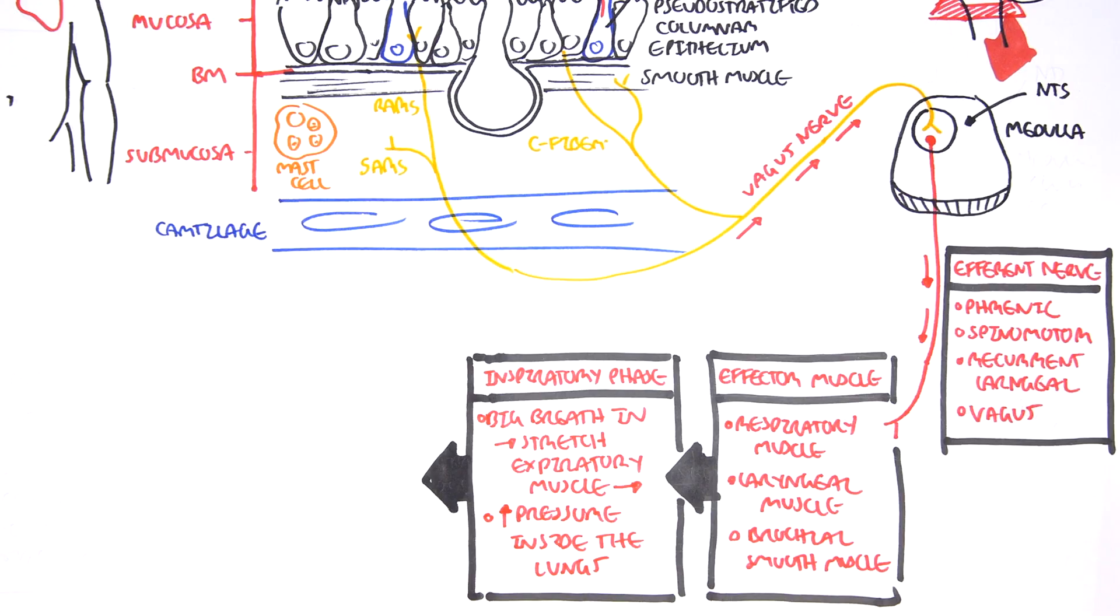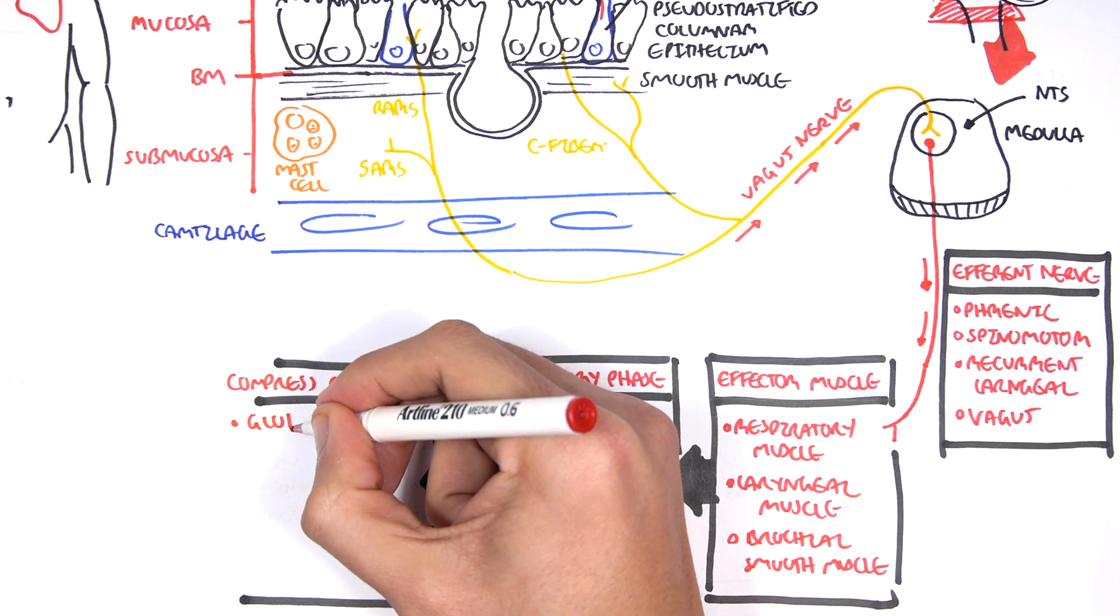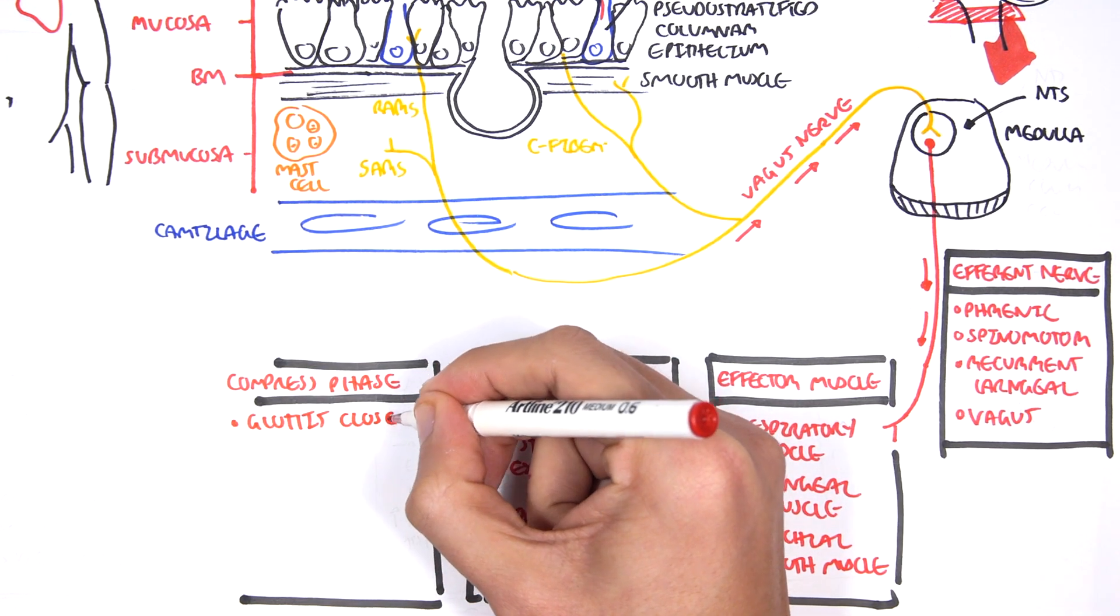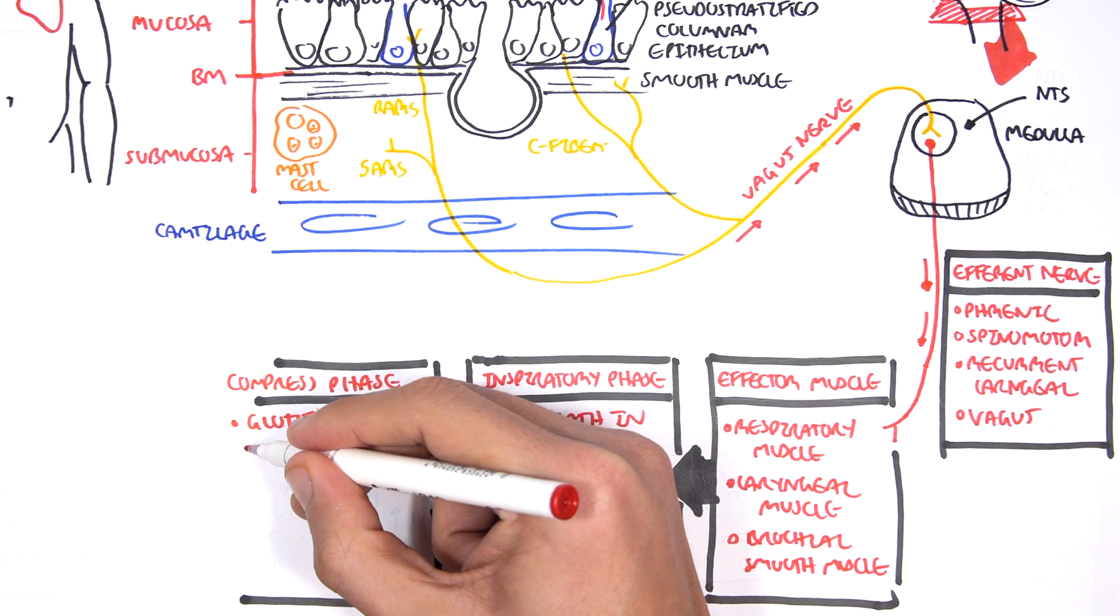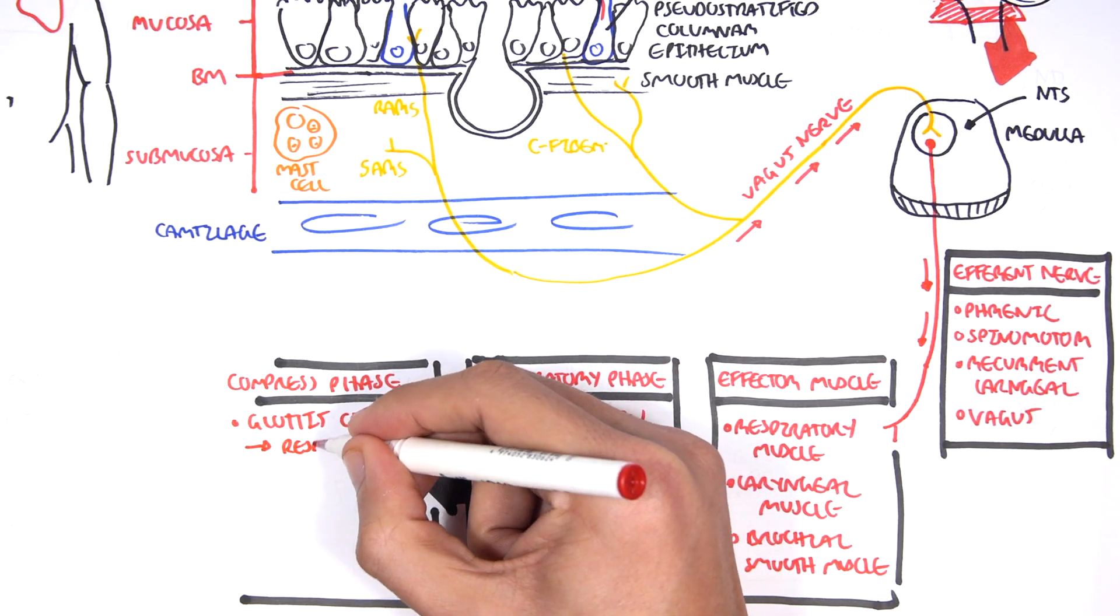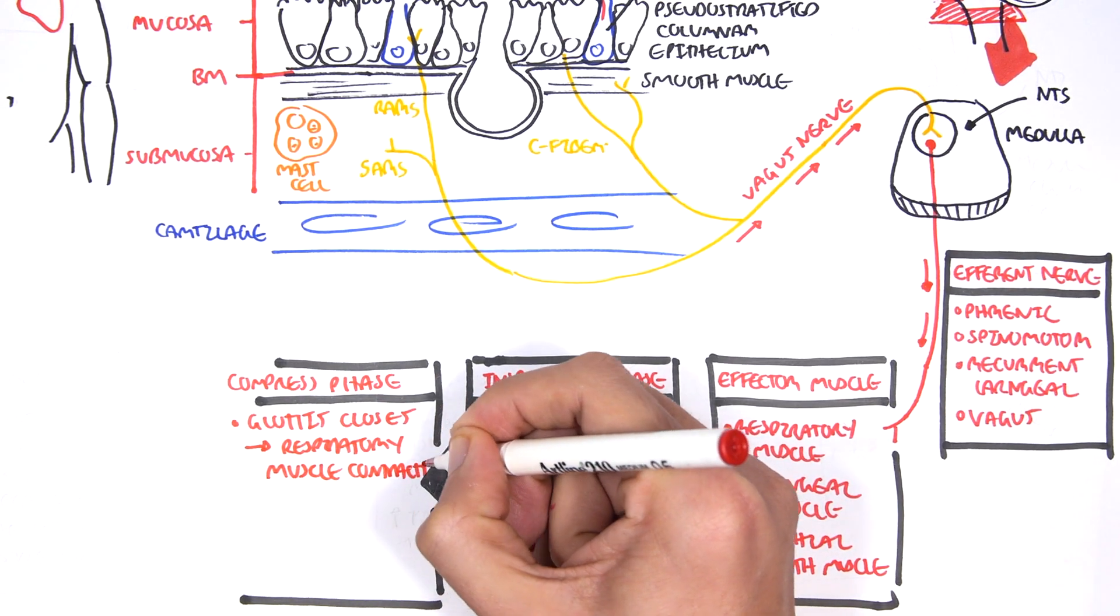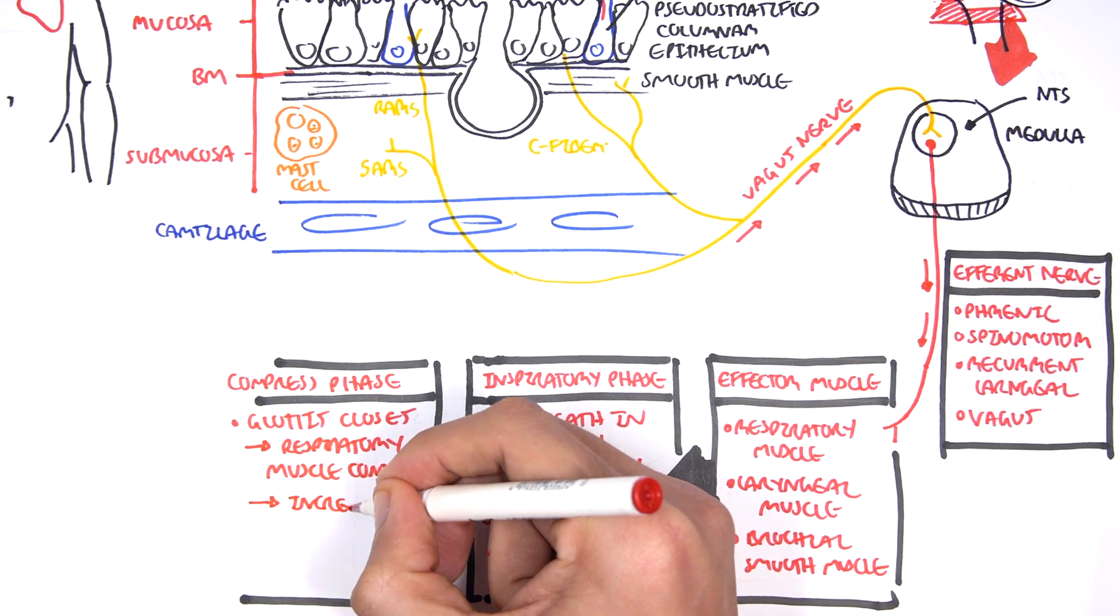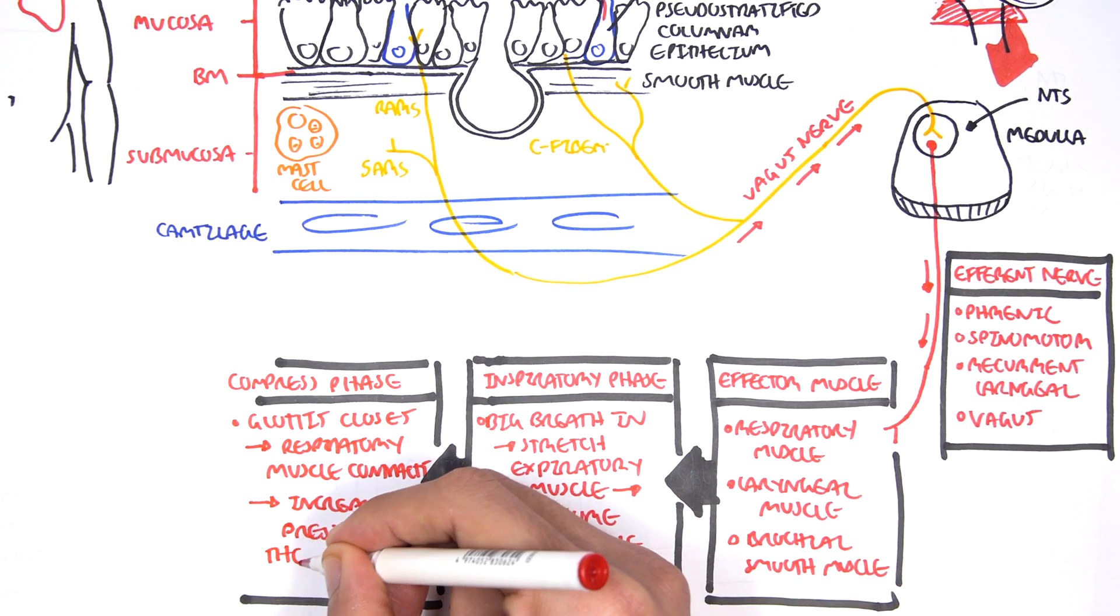The second phase is the compression phase. In the compression phase, our glottis closes, which is the opening to our lower respiratory tract. So the glottis closes, but our respiratory muscles contract. And thus, it will result in the pressure increasing even more in our lungs.